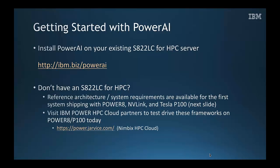Power AI is available today. We announced it in November and made it available to every client free of charge who has an accelerated power system from IBM. You can download Power AI, run that two-command install, and be up and running within 45 minutes. We highly recommend the S822LC for HPC server with the P100 GPUs. However, this will also run on the prior generation of accelerated HPC nodes, the S822 with the K80 GPUs. If you don't have either system or you're looking for a way to quickly be up and running, we have the opportunity to try out Power AI today on IBM's HPC cloud partner, Nimbix's Jarvis system, at power.jarvis.com. That will take you to an enterprise HPC cloud system available to run the IBM Caffe framework — you can be up and running on deep learning within five minutes.